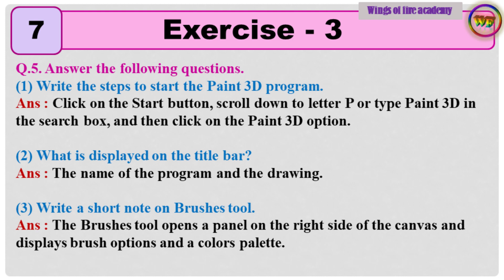Question number 5: Answer the following questions. Question 1: Write the steps to start the Paint 3D program. Answer: Click on the Start button, scroll down to letter P or type Paint 3D in the search box, and then click on the Paint 3D option. Question 2: What is displayed on the title bar? Answer: The name of the program and the drawing.